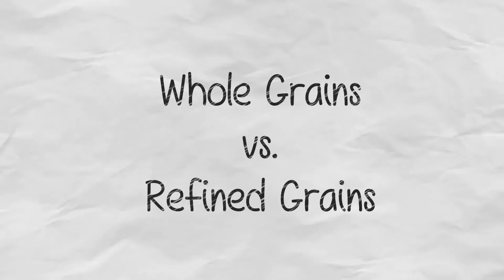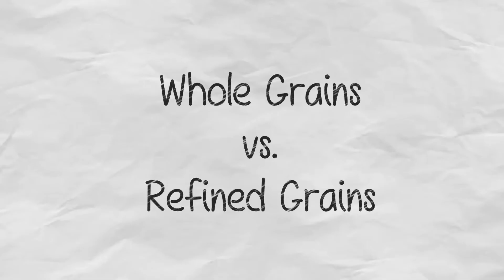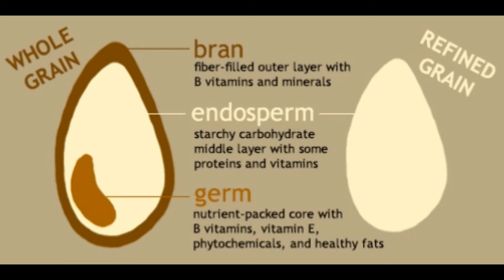Whole grains versus refined grains. Grains are the seeds of plants and there are three main components of the grain: the bran, the endosperm, and the germ. Whole grains contain all three parts, whereas a refined grain only has the endosperm.